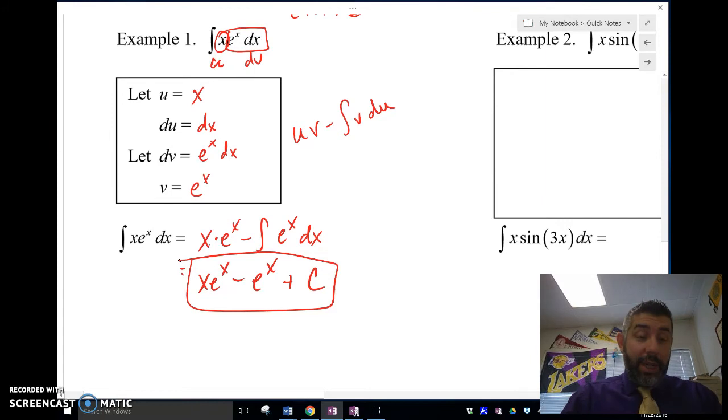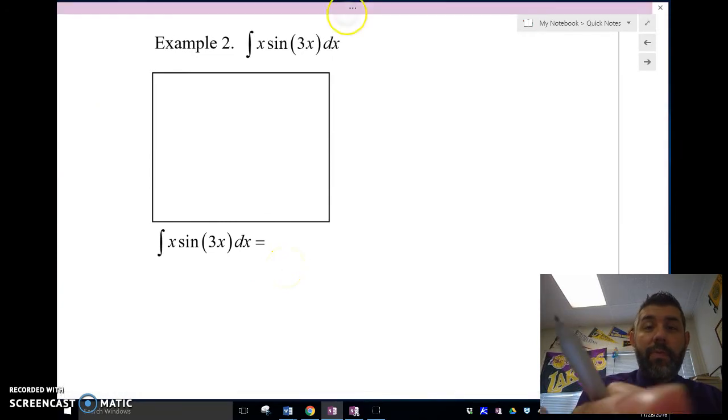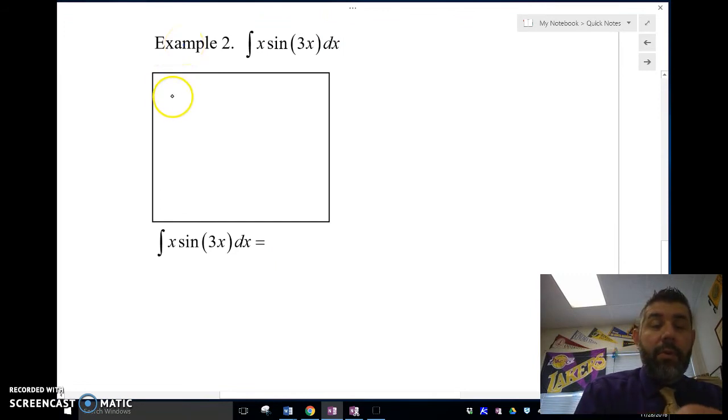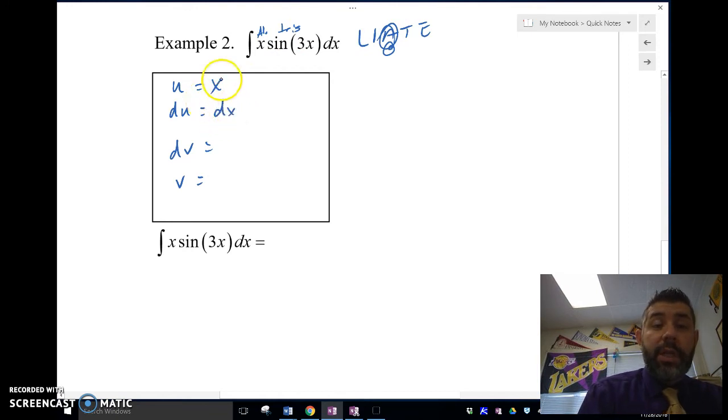Let's take a look at a couple more examples here. Let's see if I can get through all these examples in my 15-minute allotment. So example number two. Let's use a different color here. So we want to find u and du, and we want to find dv and v. So LIATE. We've got an algebraic and then a trig. And so what comes first? Algebraic comes first.